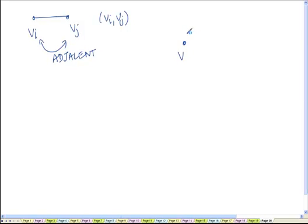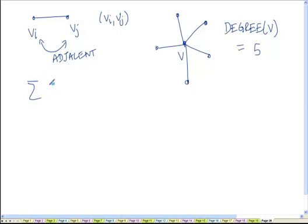So the number of vertices that are adjacent to any given vertex. So let's take a vertex V and let's say there are 5 vertices that are adjacent to V in a graph. The number of vertices that are adjacent to a given vertex is called the degree of that vertex. So the degree of V here is 5. Another way to say it is, it's the number of edges that are incident on the vertex.